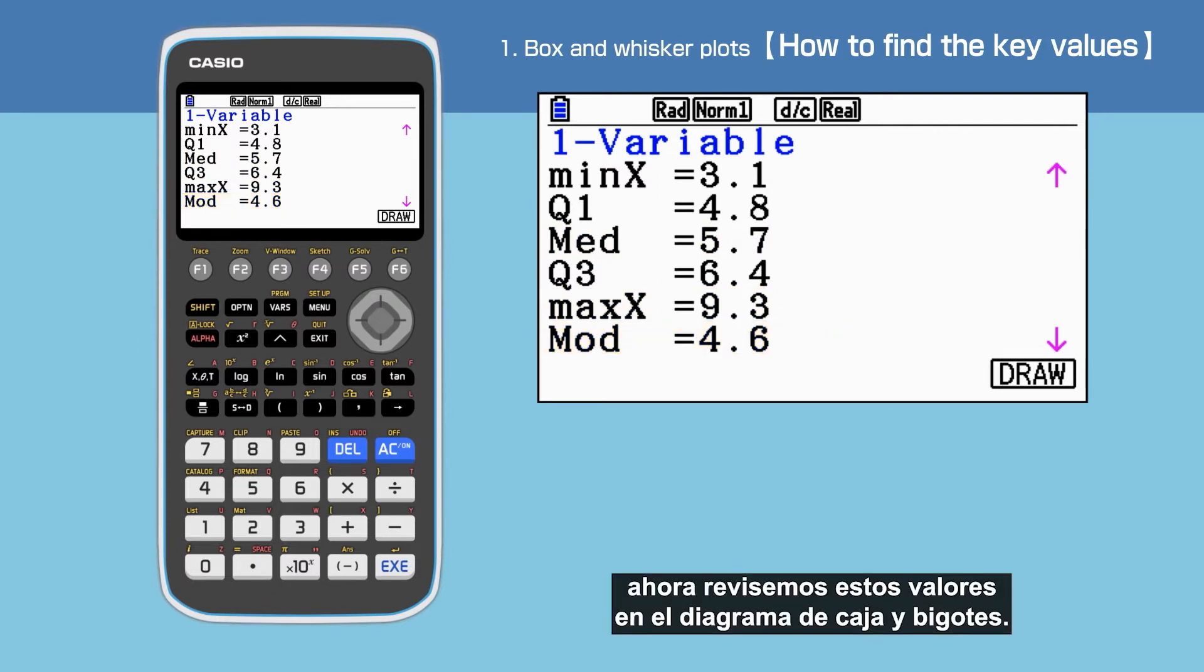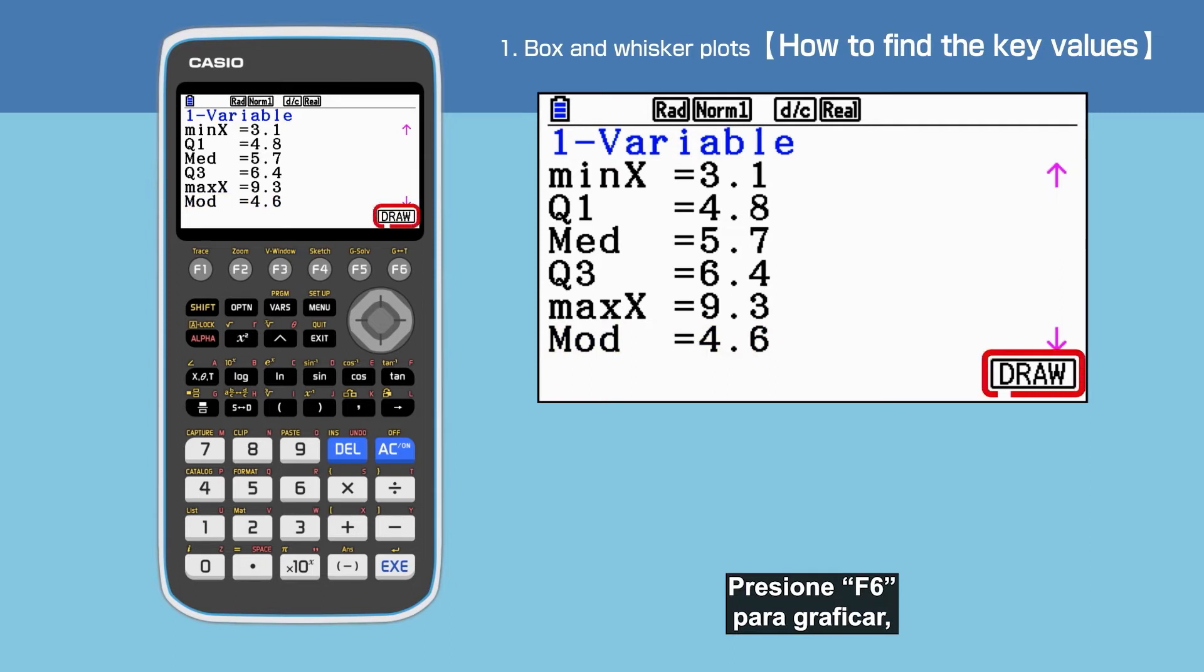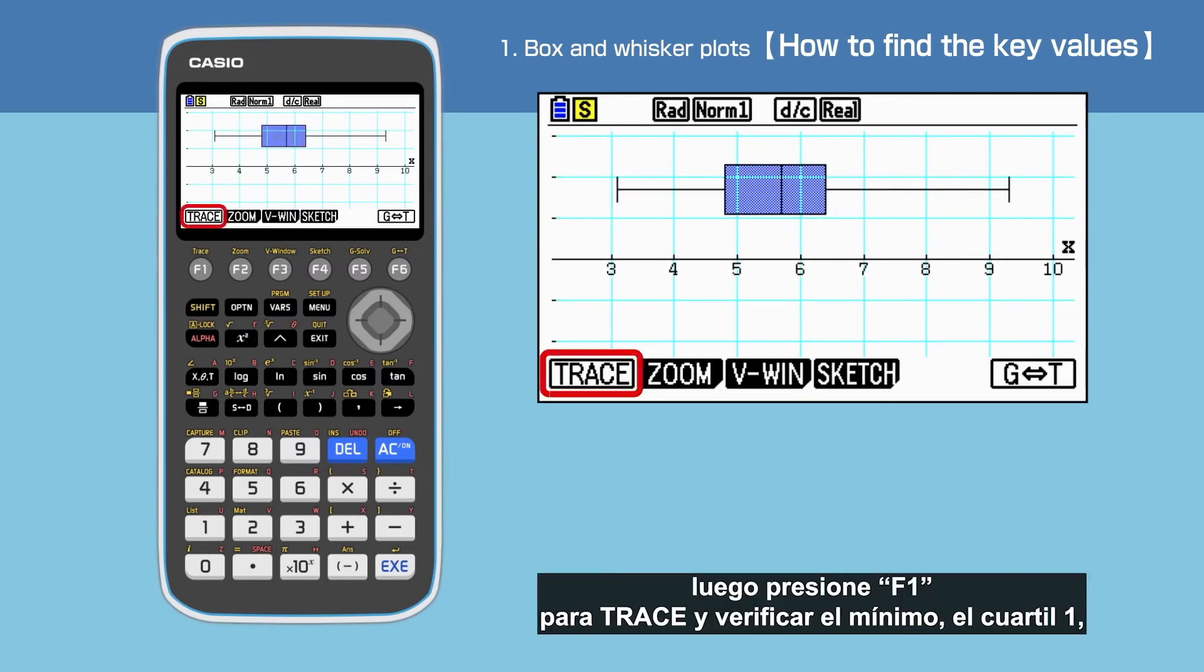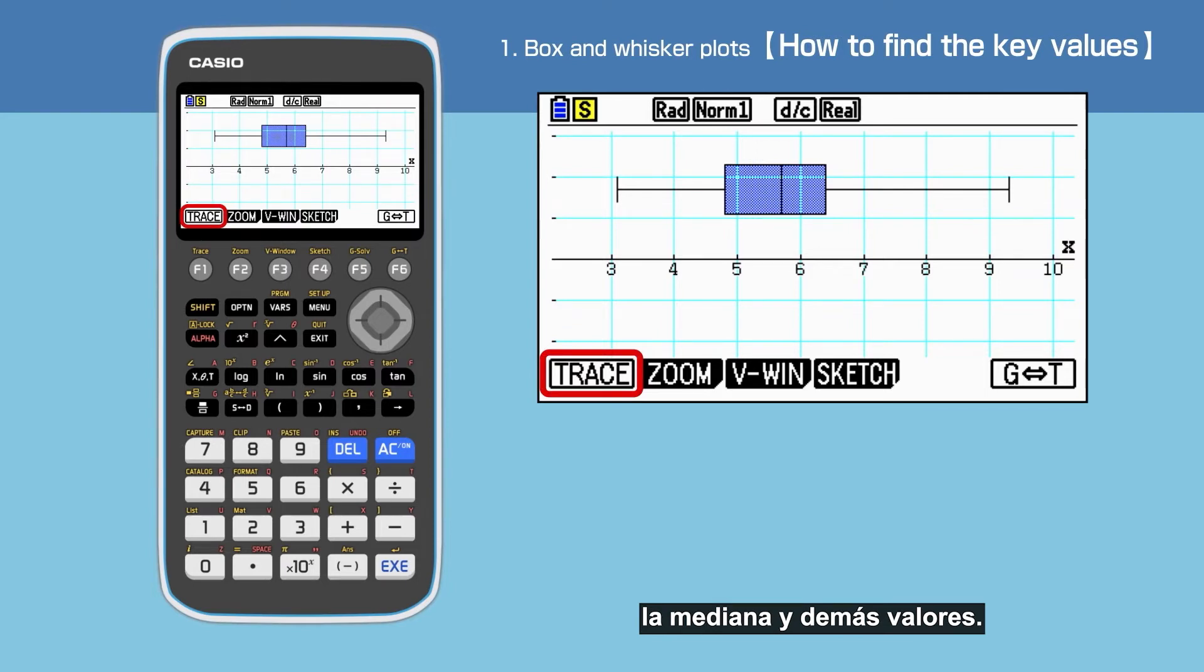Let's check these values in the box and whisker plot. Press F6 to draw. Press Shift to display the command menu. Then press F1 to trace minimum, Q1, median and so on to check these values.